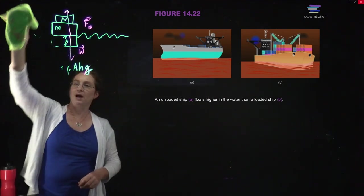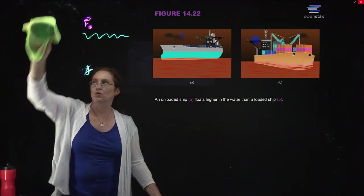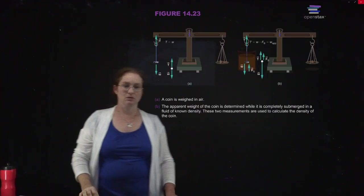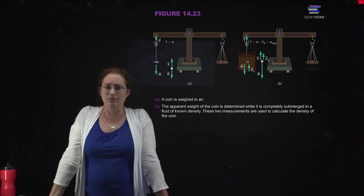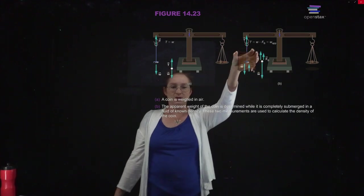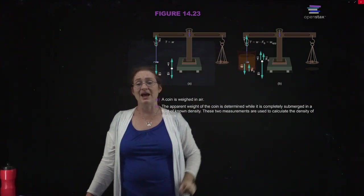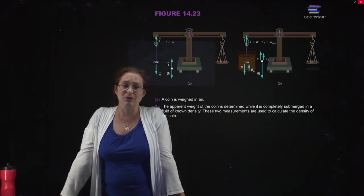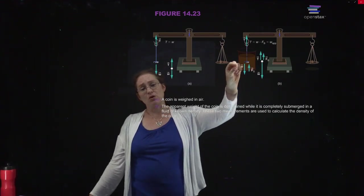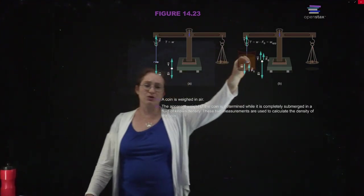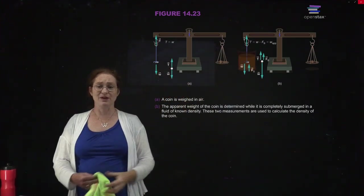You can actually use buoyancy to measure densities. Weigh a coin in air, then submerge it in a liquid of known density. The apparent mass of the coin changes. Using that difference, you can calculate the buoyant force, which is dependent on the density. What you're measuring is the tension in the string — not the total weight — which indirectly gives you the buoyant force and therefore the density.